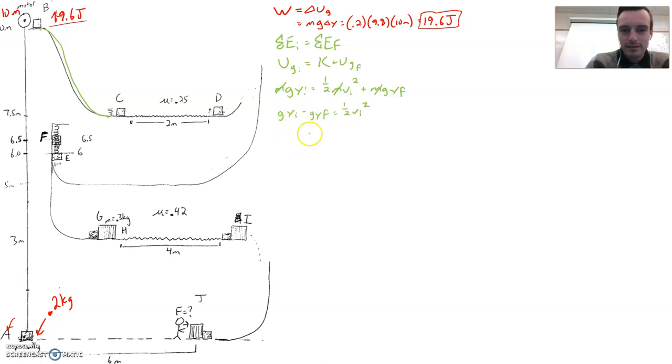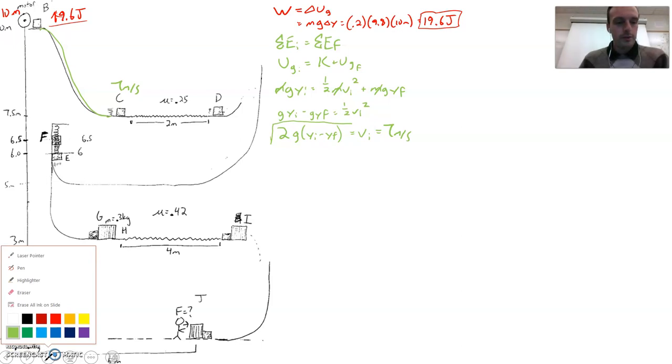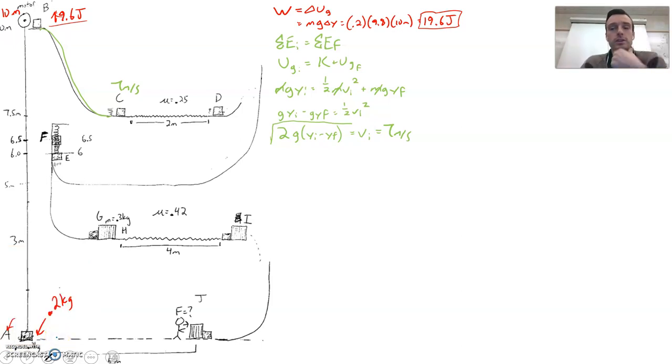We could be like G times Y initial minus Y final, and then we could also multiply both sides by two to get rid of that one-half, and then we take the square root of both sides to get to V I. Let's just double check to make sure that the format that I've put it in here is going to get us a legit answer. So it's going to be two times 9.8 times the quantity 10 minus seven and a half. And indeed, I get our answer key answer, which is seven meters per second. At point C, we are going seven meters per second.